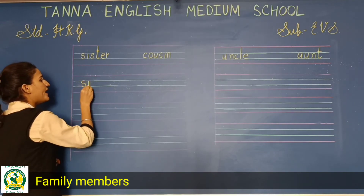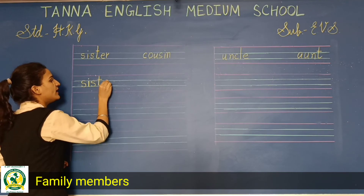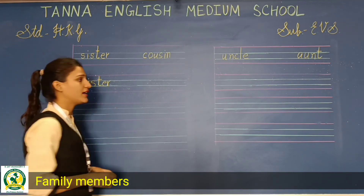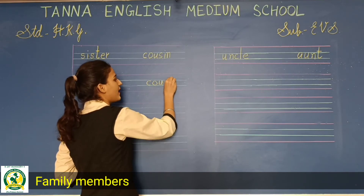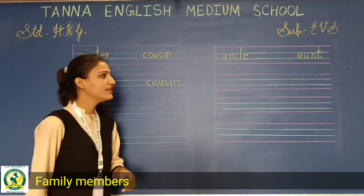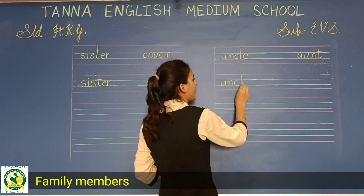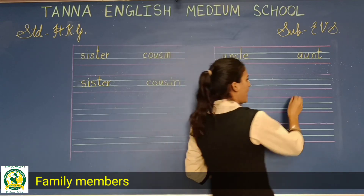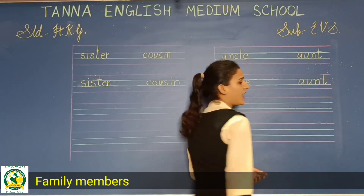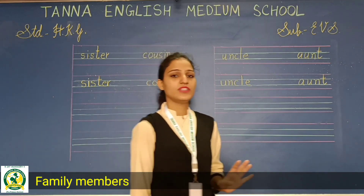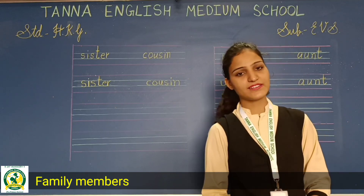Sister — S-I-S-T-E-R. Cousin — C-O-U-S-I-N. Uncle — U-N-C-L-E, and aunt — A-U-N-T. These family member's names you have to write in your EBS CW and as homework.